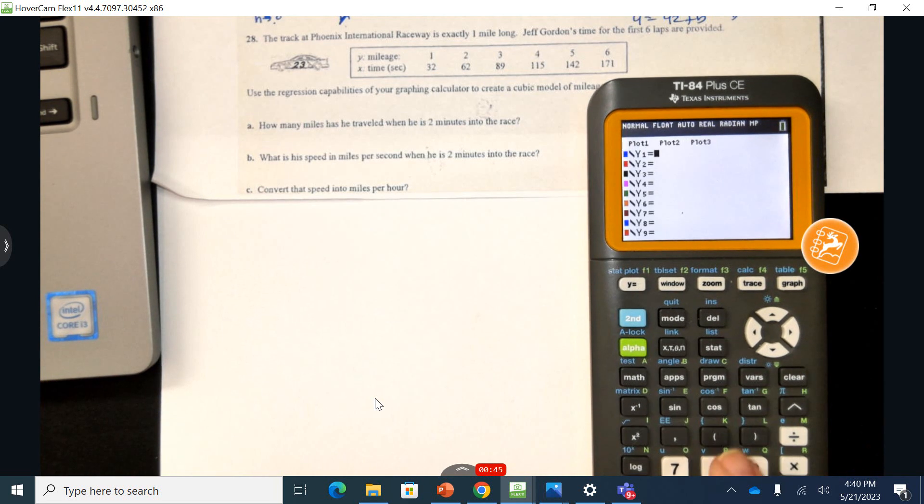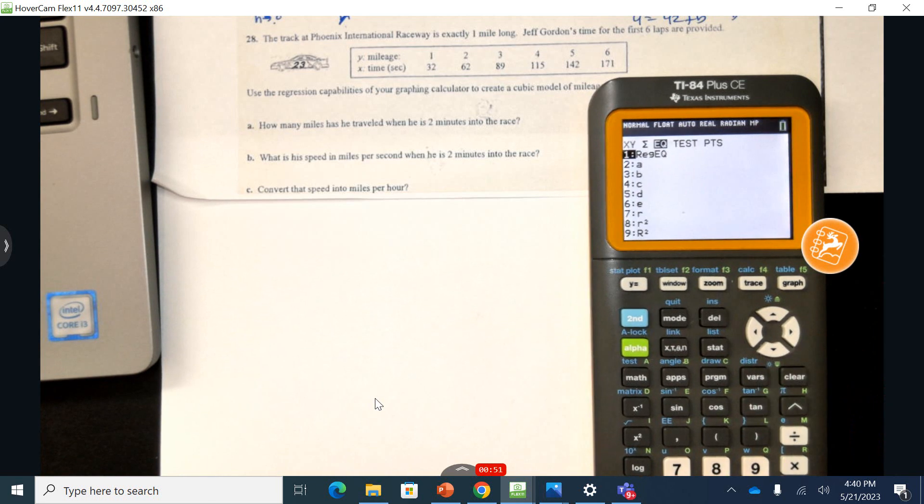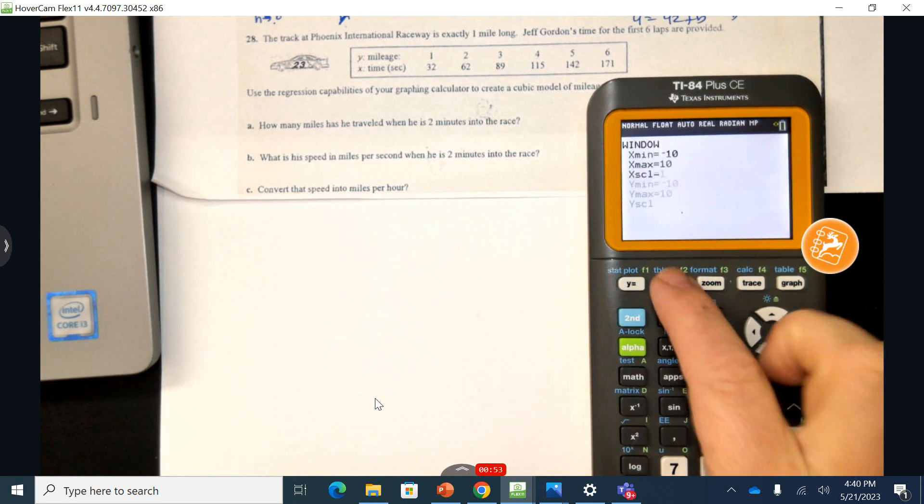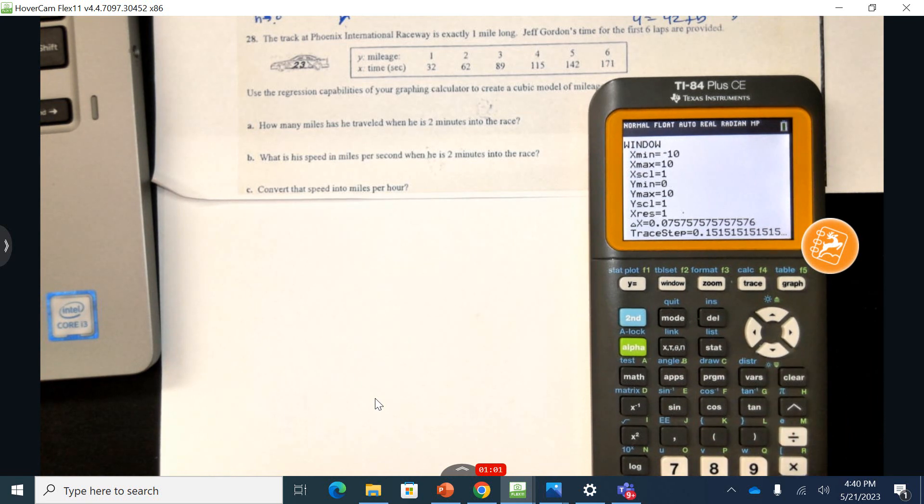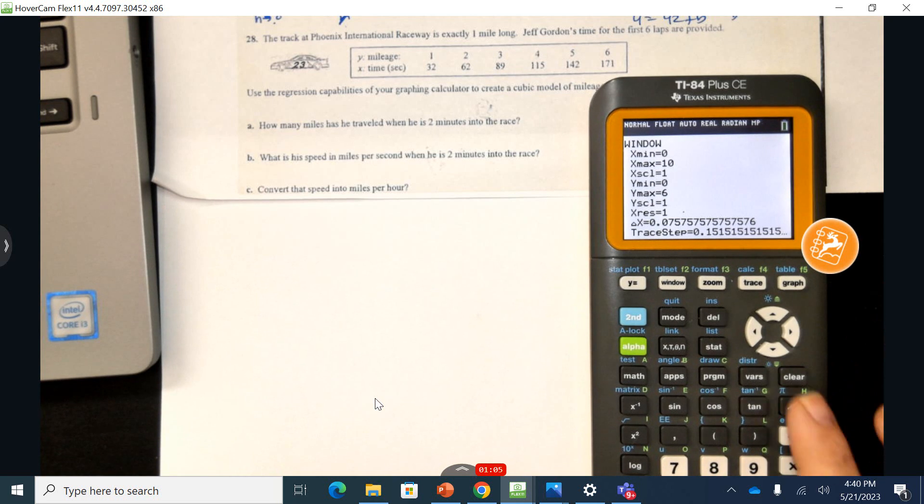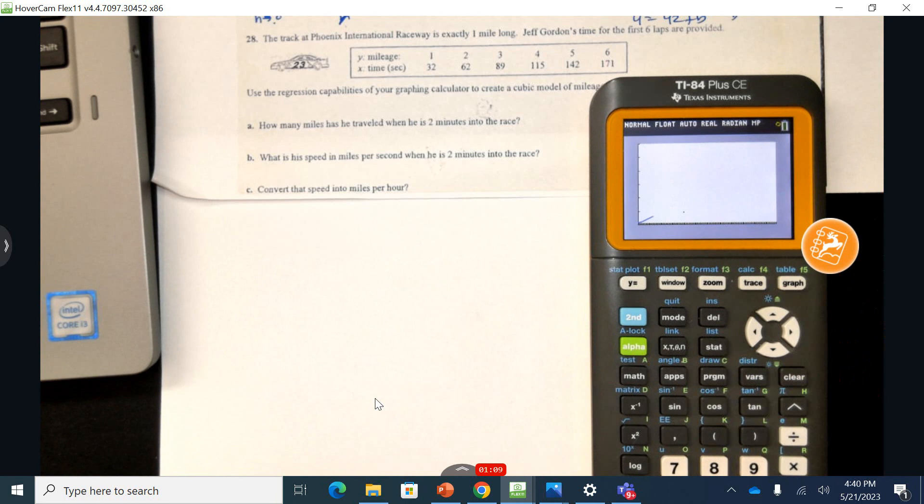Now if I go up to Y equals, I can hit vars, go down to stat, go across the equation and I can put that in. Let's check this window. So for our window right now, our Y values can go up to 6 and our X values can go up to, we'll put it at 180 to give enough space to see this.